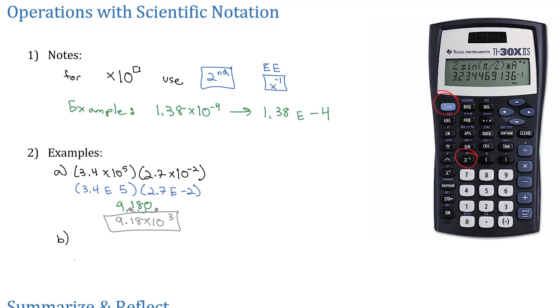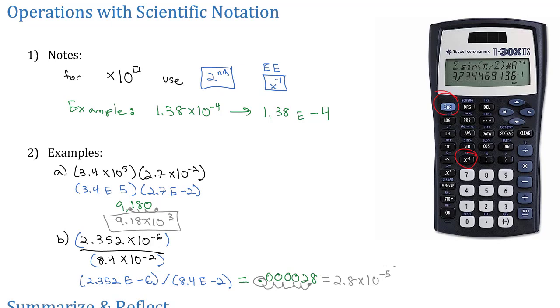Let's do another example. Let's try 2.352 times 10 to the negative sixth and we'll divide by 8.4 times 10 to the negative 2. Put this in the calculator. Very similar, we can do parentheses. We always like to put parentheses around the numerator and denominator when there's multiple stuff happening in there. 2.352, second EE, negative 6, and then we're going to hit the divide button to go 8.4, second EE, negative 2. And when I do, it's going to tell me the answer is 0.000028, which we can convert to scientific notation by moving the decimal point five times. So that's going to be 2.8 times 10 to the negative fifth, because it was a small number close to zero.